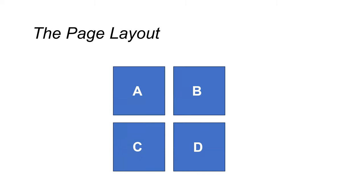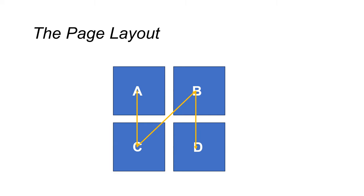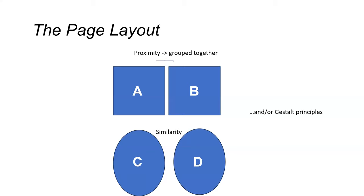However, the physical organization of panels does not determine how to navigate through them alone. Here we have a grid-style A, B, C, D, but we can read this in different ways. For instance, we can follow a Z-path from left to right, then down diagonal, and left to right again. Or we can follow an M-path: downward, then up diagonal, and then downward again. These might be influenced by reading paths in written systems, or by gestalt principles — such as proximity between panels helping to group them together, or similarity between shapes also grouping them.